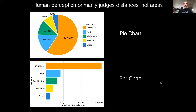Particularly in the pie chart, we're encoding a lot of information in terms of angular distances, which we're not optimized for as a species.